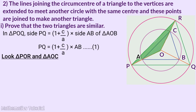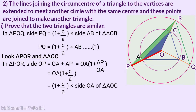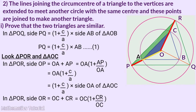Triangle POR and triangle AOC: triangle POR side OP equals OA plus AP, which is OA into 1 plus AP by OA. OA is the small circular radius A, so this becomes 1 plus C by A into side OA of triangle AOC. This becomes OC into 1 plus C by A.